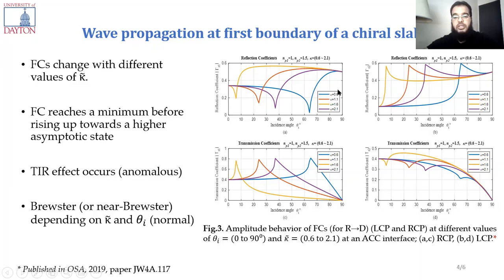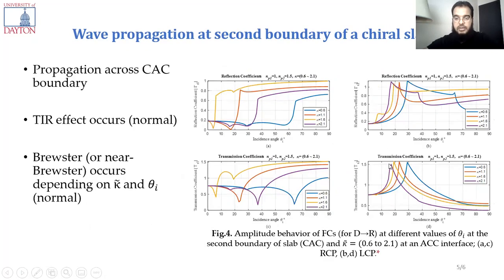So we are changing the Kaba factor from 0.6 to 2.1 to control these phenomena and see how that affects the transmitted waves. The same thing applies for the second boundary of this slab, where the transmission and reflection coefficients have been calculated.